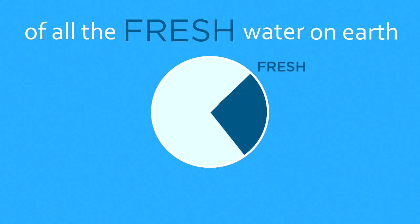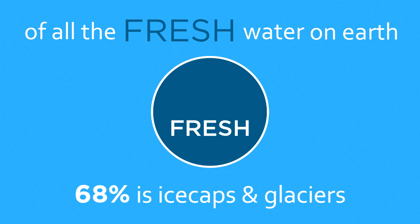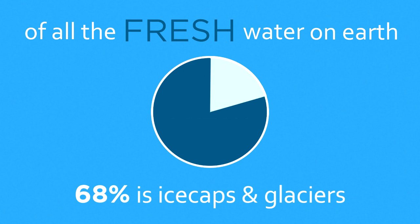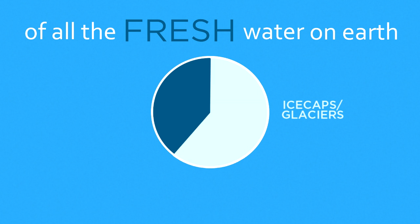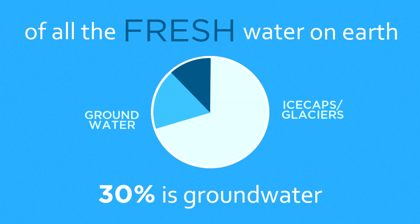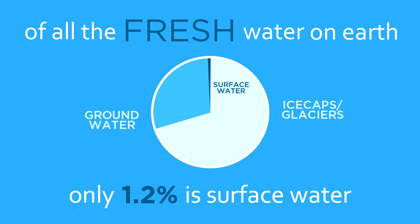Of the freshwater, 68% is in ice caps and glaciers, 30% in groundwater, and only 1.2% is surface water.